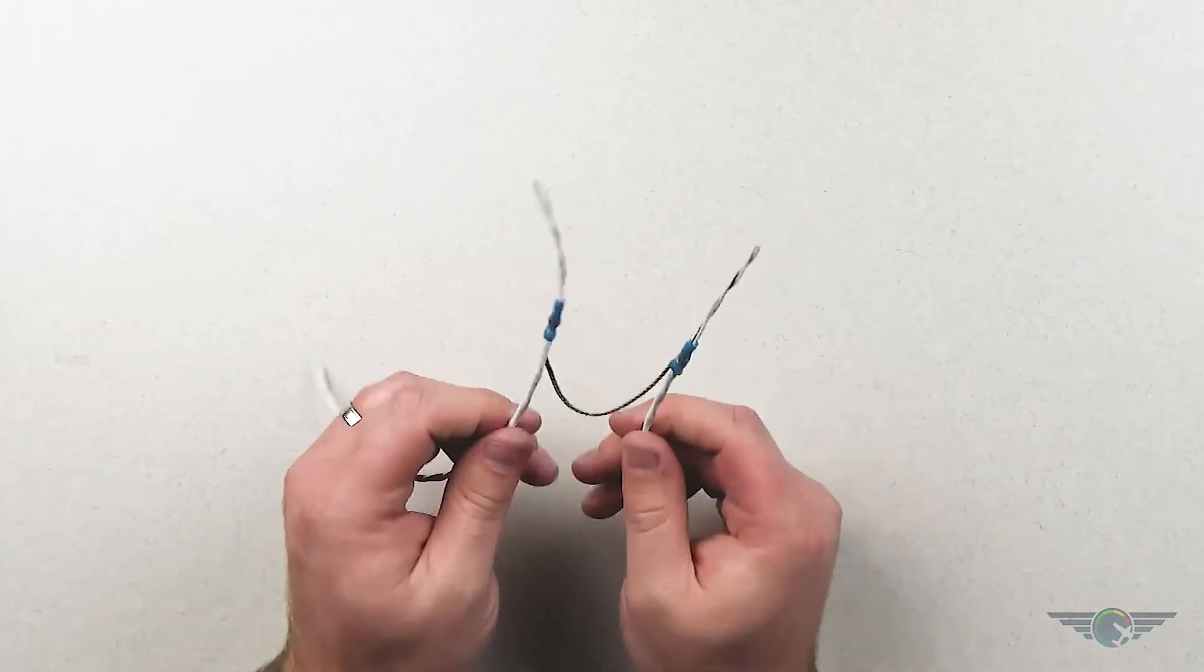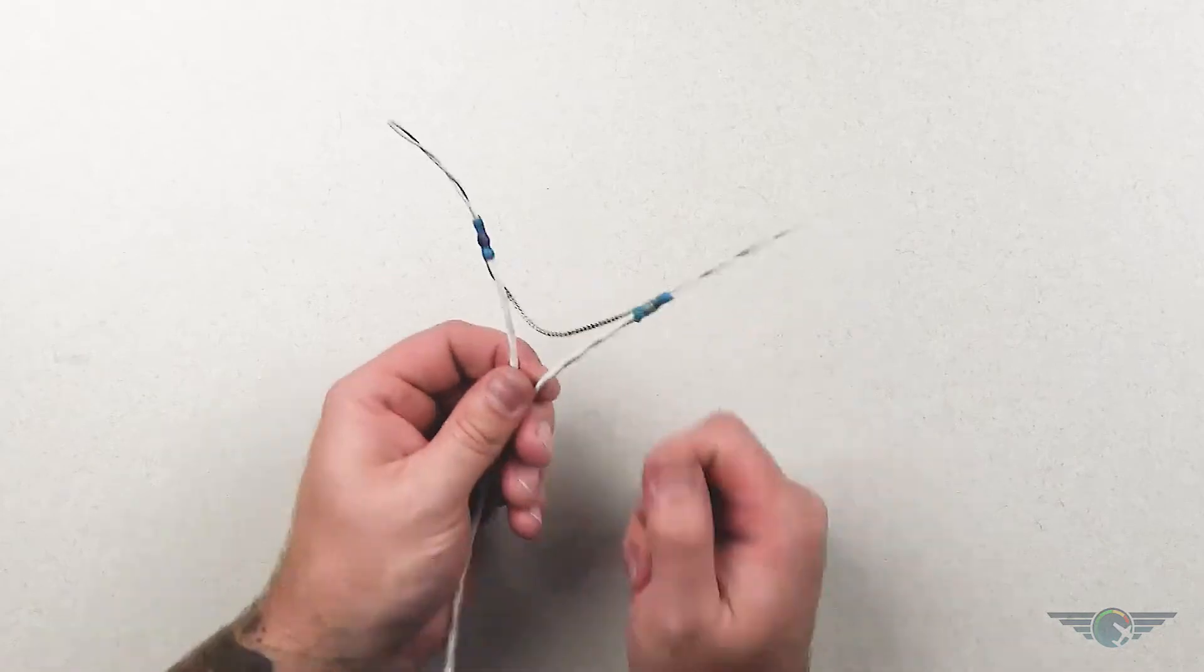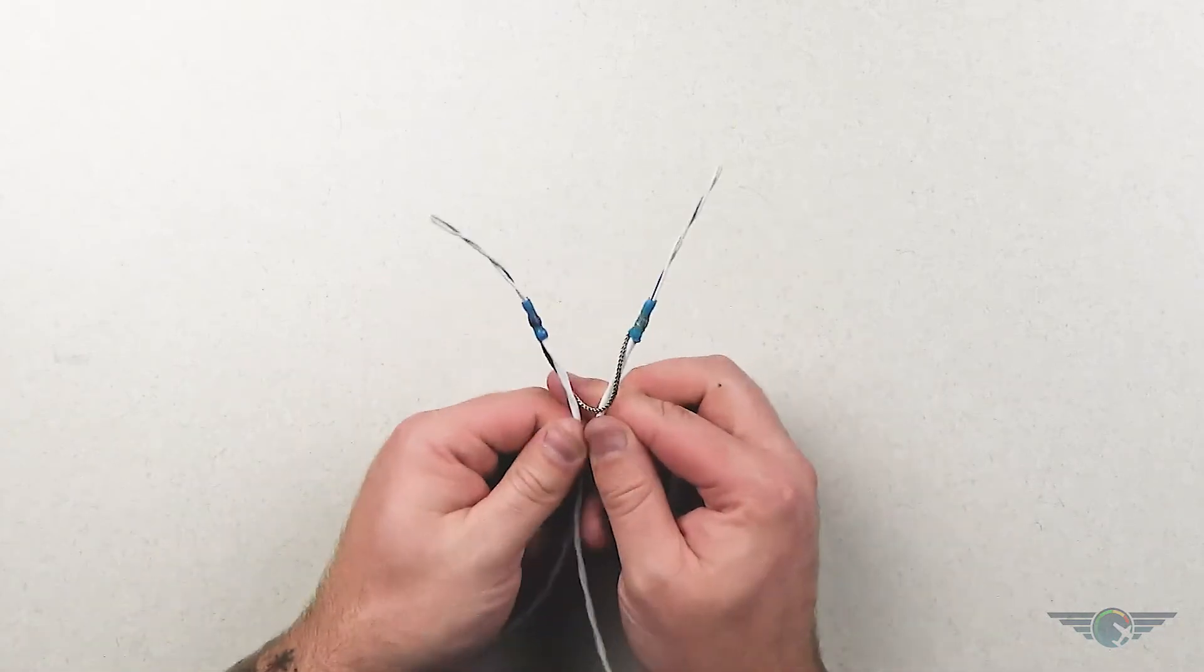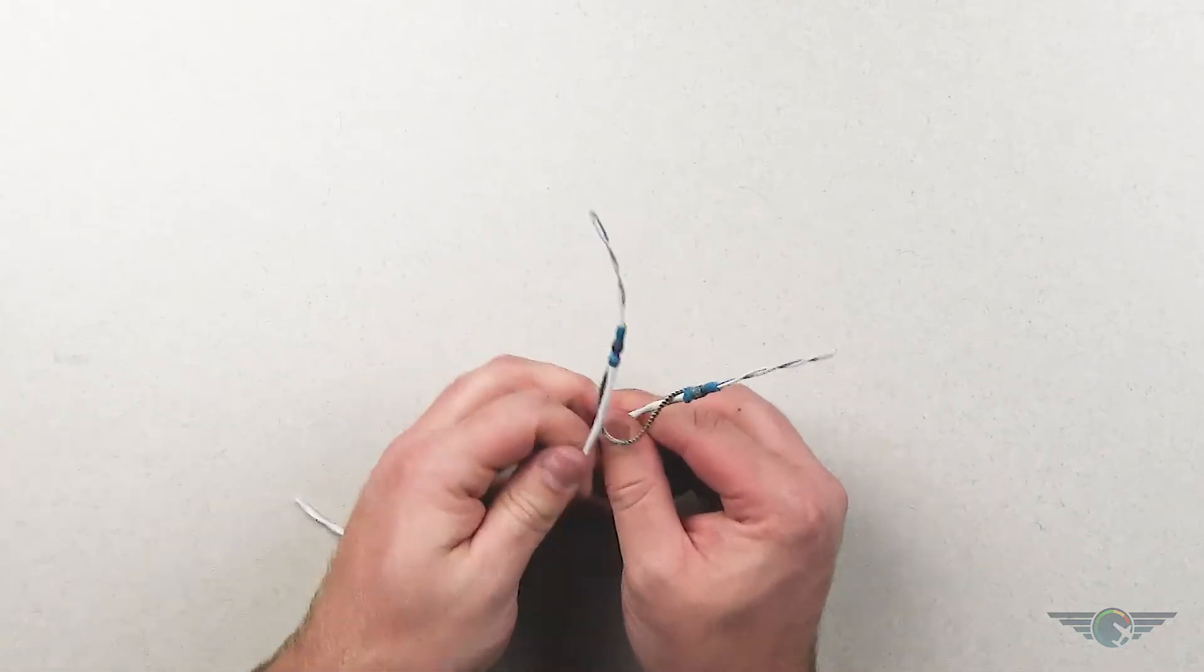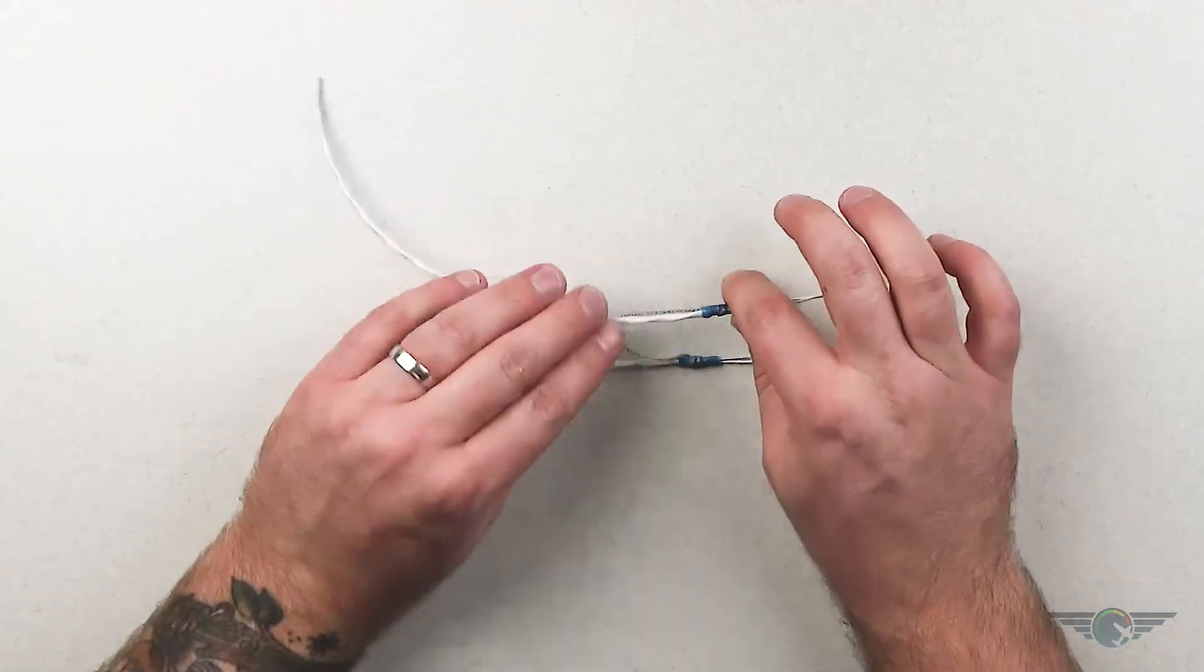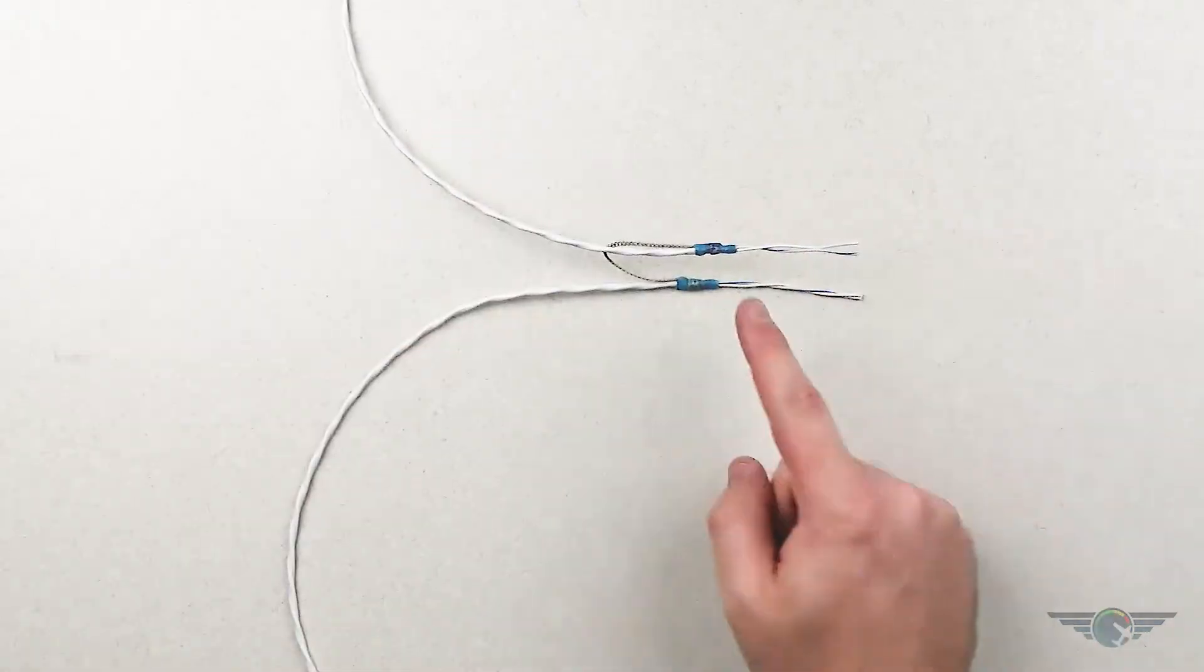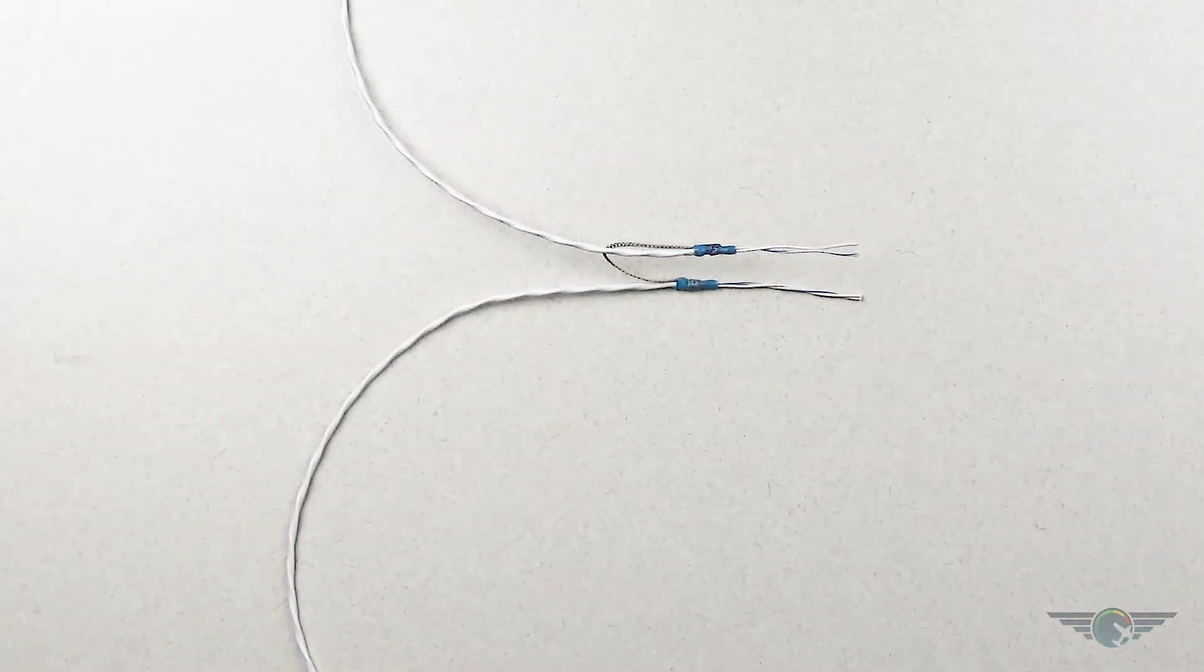All right. So we see there that our center band turned a lot more silver than this one did, but we got our good connection, and we've got a finished up daisy chain using the solder sleeve method as opposed to just soldering method. So there's our completed shield drain or daisy chain of our shield drain.